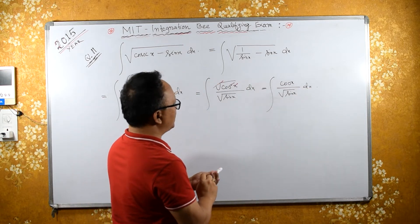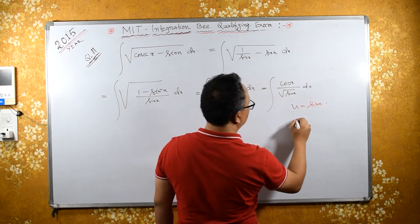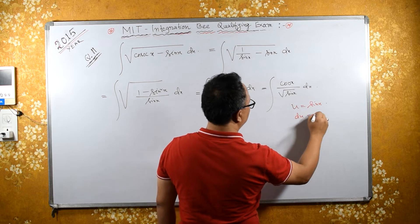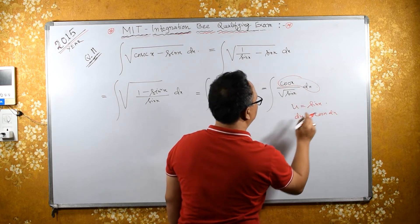let's substitute u equals sin x. Then du equals cos x dx. These become du.